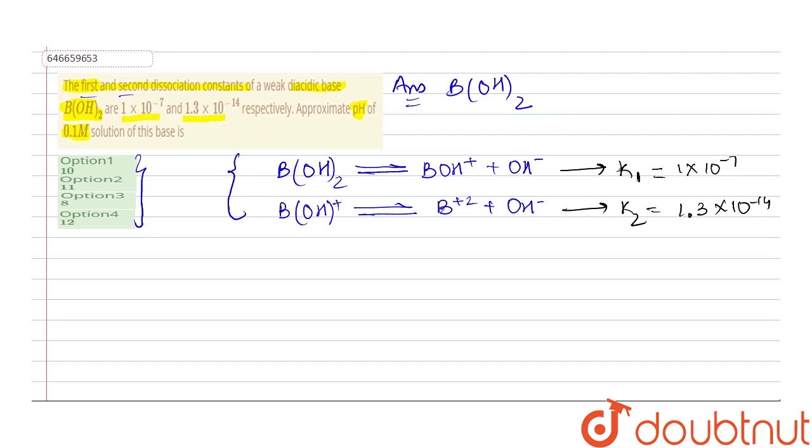Now if we proceed further, it is given that for a 0.1 molar solution, in these cases the pH value for a dibasic acid or dibasic base is given as